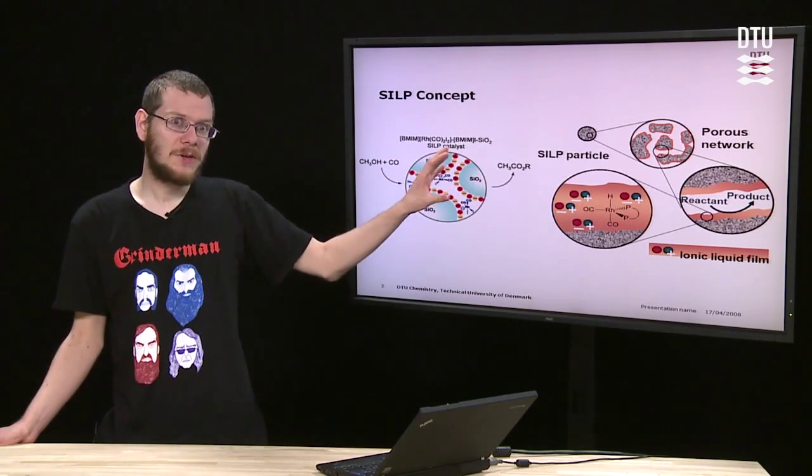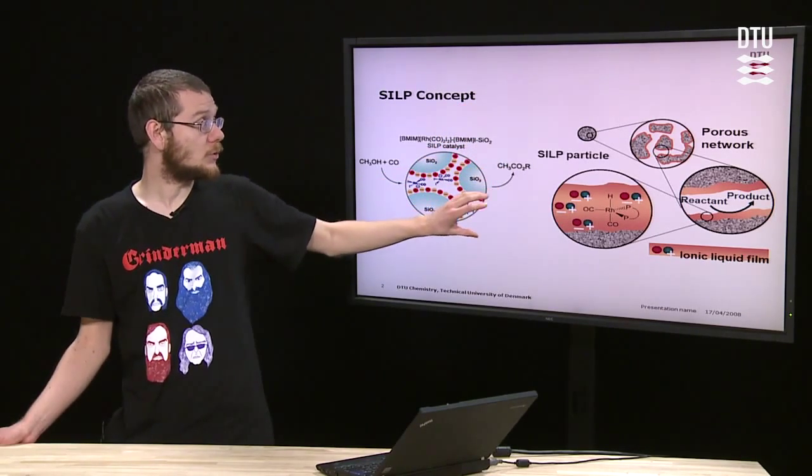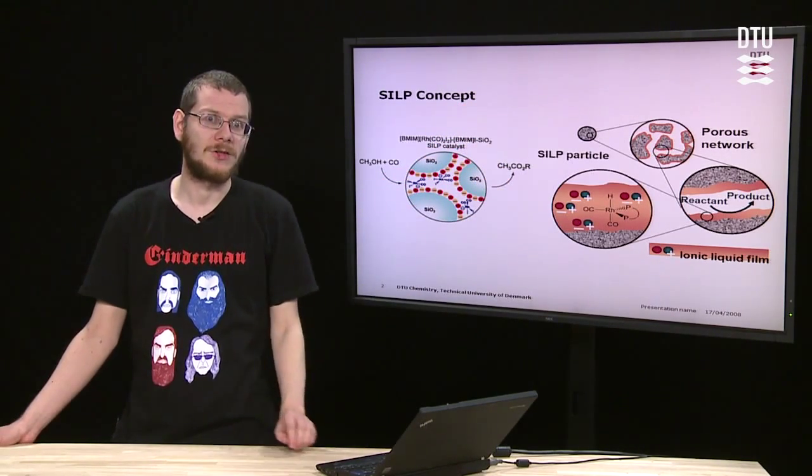What we have on the right is basically we start out with this large scale thing and we zoom in, and as you can see we end up with this catalyst in ionic liquid.